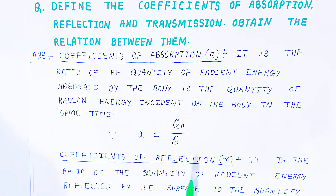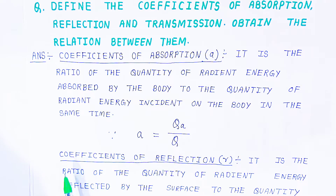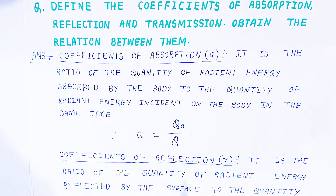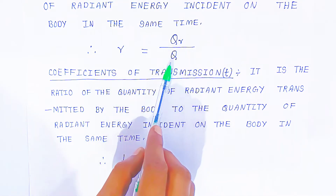Now we are going to define the coefficient of reflection, shown with small 'r'. It is the ratio of the quantity of radiant energy reflected by the surface to the quantity of radiant energy incident on the body in the same time. So, r equals QR upon Q.